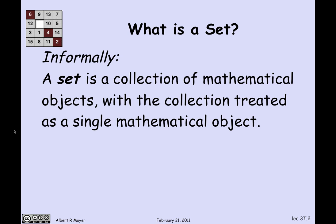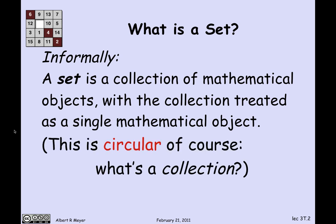Informally, a set is just a collection of mathematical objects, with the collection treated as a single mathematical object. This is a pretty informal definition, because if you think about it, it's entirely circular — it uses the idea of a collection, which is no clearer than what a set is in the first place.